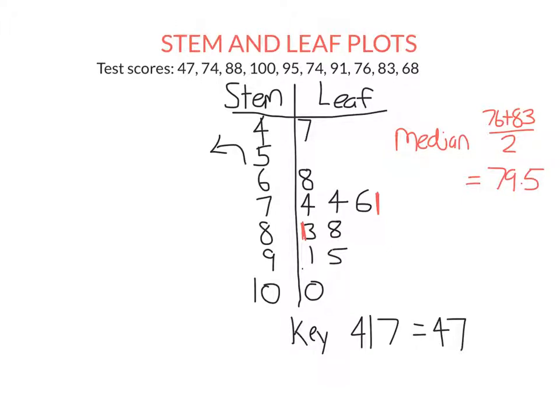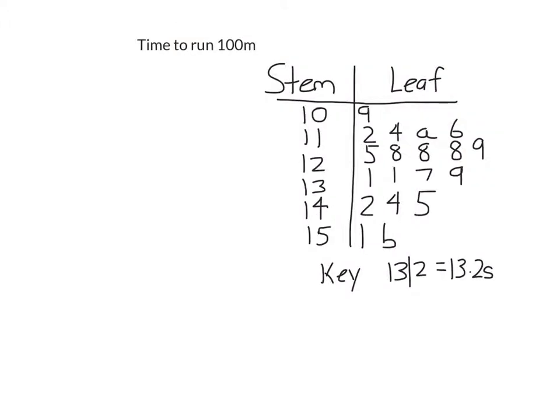So now I'm going to give you a stem and leaf plot that's already done and we're going to answer some questions about it. So here I have a stem and leaf plot of the time to run 100 meters. So the key here is if I have 13, this is the number of whole seconds and this is the number of tenths of a second. So 13, 2 means 13.2 seconds.